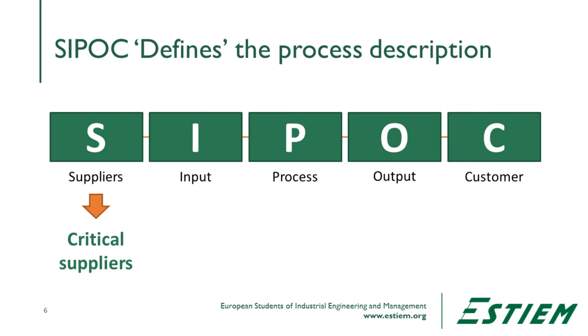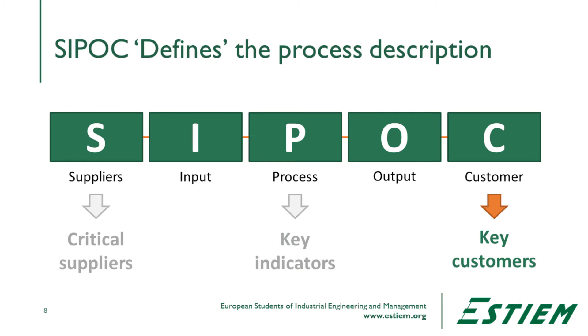On the supplier side, we have to identify all critical suppliers — who's providing raw material, support services, testing, employees, subcontractors, transportation, or joint venture partners. Inside the process, we look at all the steps, the key performance indicators, which ones are controllable, and which are uncontrollable — acting as noise we can't eliminate but must dampen. Finally, on the output side, we identify which customers are receiving which deliverables and how their expectations differ.